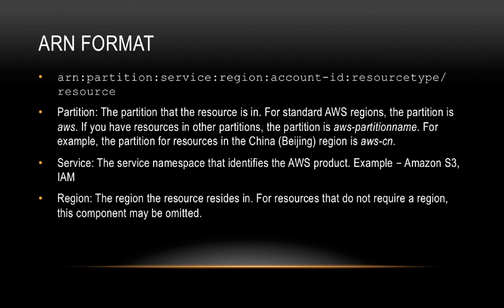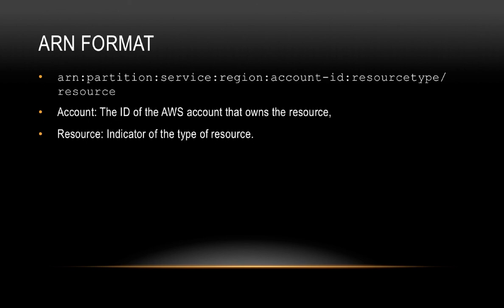You then have service, which indicates the service namespace that identifies the AWS product — for example, Amazon S3, IAM, and so on. You then have region, which indicates the region the resource resides in. For resources that do not require a region, this component may not be present. We then have account ID, which is the ID of the AWS account that owns the resource. Finally, we have resource, which is an indicator of the type of resource that the ARN is trying to identify.